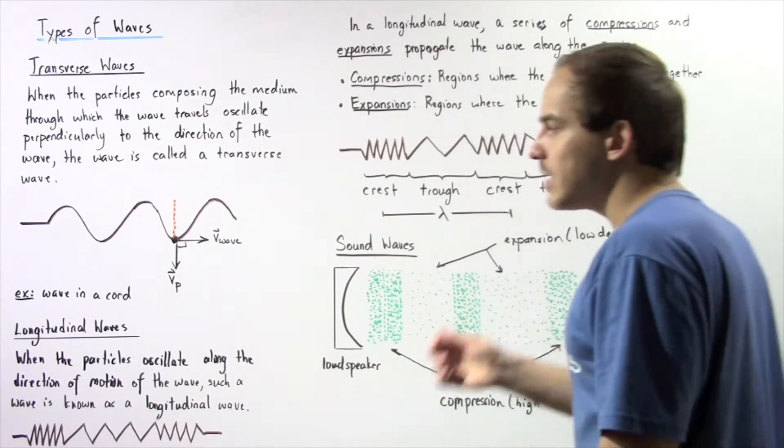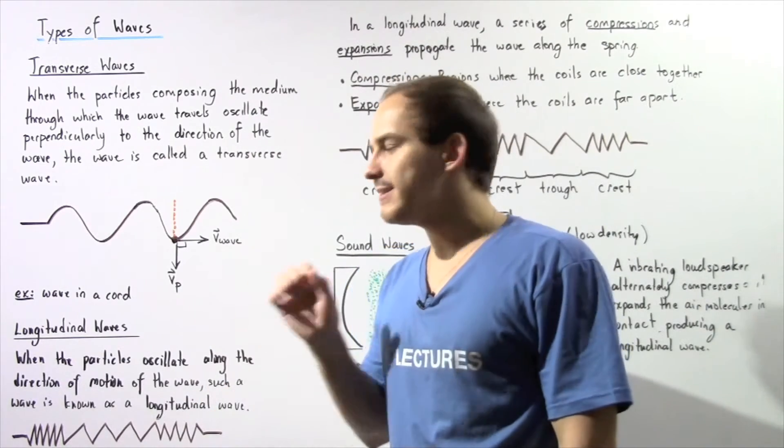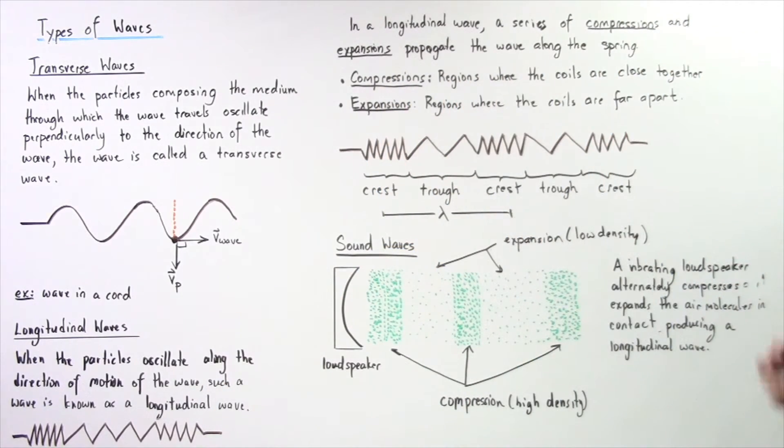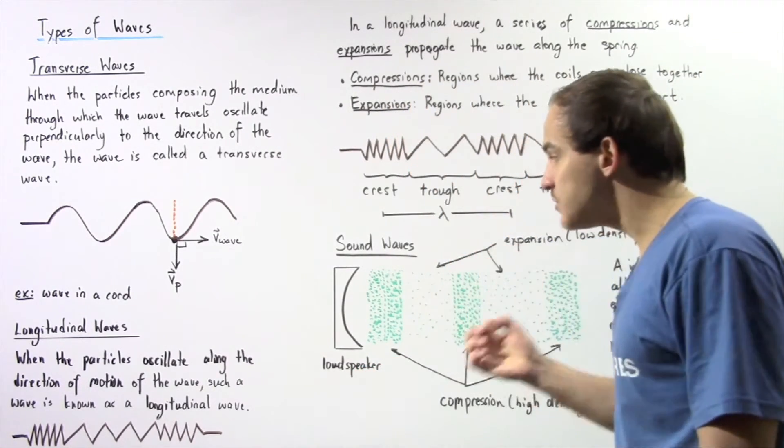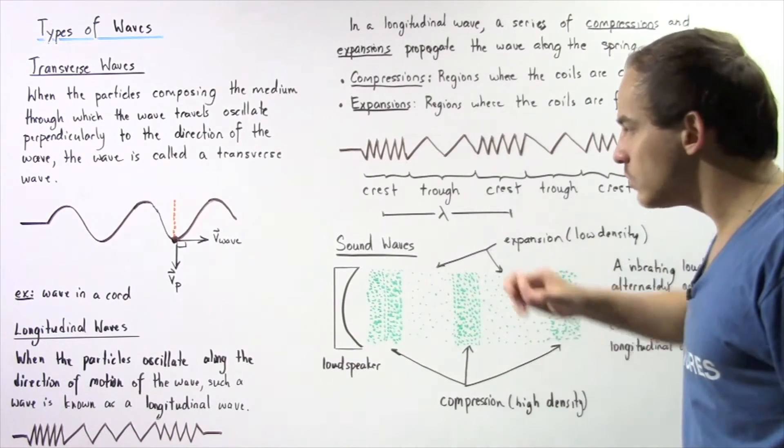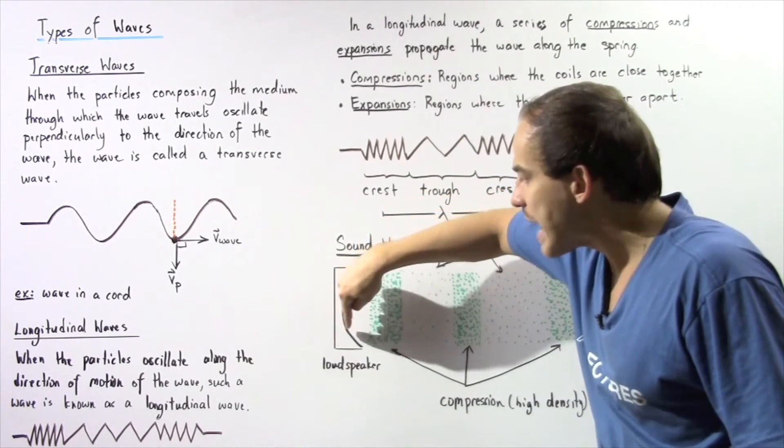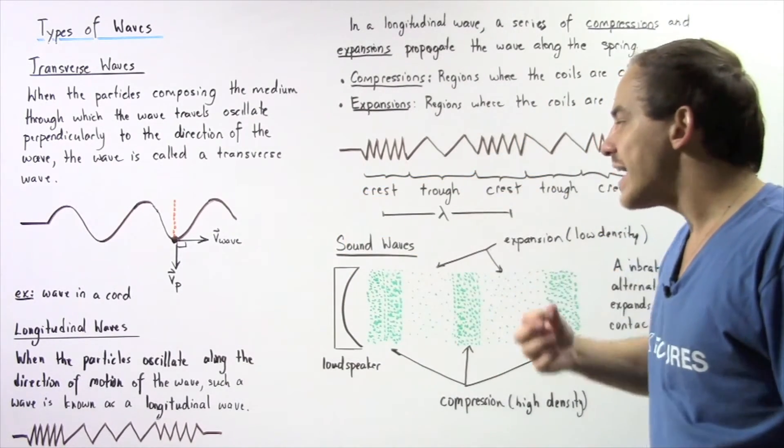Now, one other example of a longitudinal wave that we'll talk about in more detail in the following chapter is known as a sound wave. So let's suppose we have a loudspeaker. The loudspeaker creates sound by essentially vibrating this region rapidly. So this region oscillates back and forth.